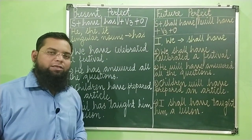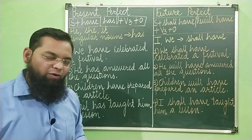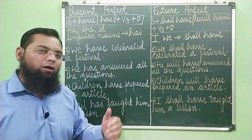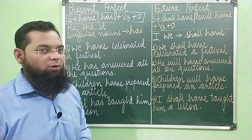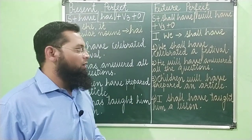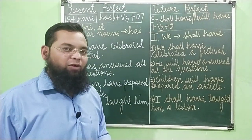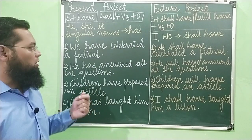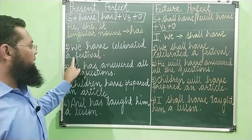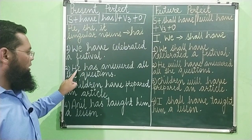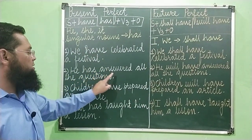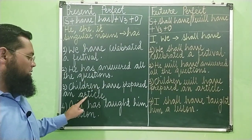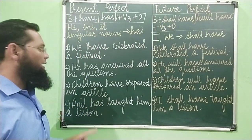It is very easy to convert an affirmative sentence into a negative sentence. We have to add 'not' after the helping verb. We have not celebrated a festival. He has not answered all the questions. Children have not prepared an article. Anil has not taught him a lesson. So this will be the negative formation.